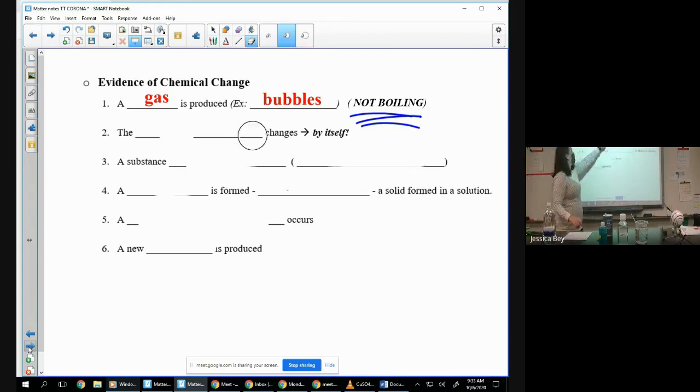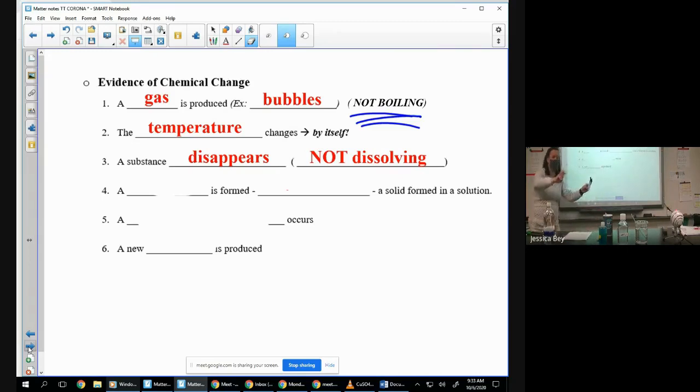If the temperature changes all by itself, I'm not talking about, you're like, well water gets hotter when you boil it. Well that's because you have it on a heating source, you know it's not like it's just all of a sudden spontaneously boiling. What I'm talking about is how this produced heat all by itself. All of a sudden it was like I put a little heat on there, but then it just got hotter and hotter and hotter by itself. Another piece of evidence is that if a substance disappears, do I have the same amount of paper I had at the beginning? I don't know, it went away. Another, I feel like every single evidence I'm like but, okay, don't think except dissolving, right? It looks like it disappears and dissolving.